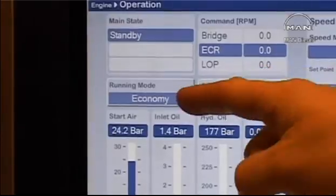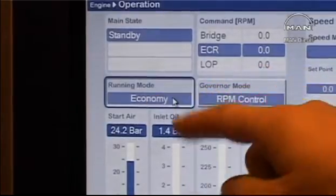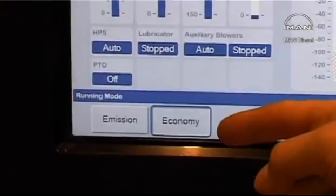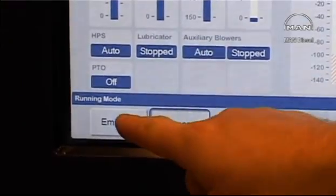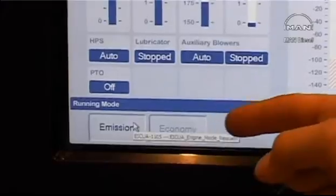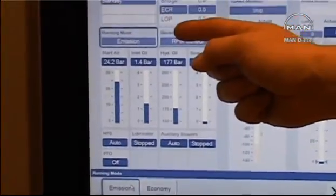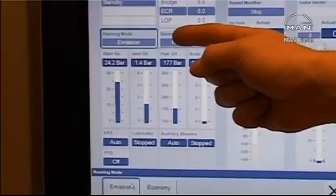System flexibility is obtained by means of different running modes. These are selected either automatically to suit specific operating conditions or manually by the operator to meet specific goals such as low fuel oil consumption or limited exhaust gas emission.